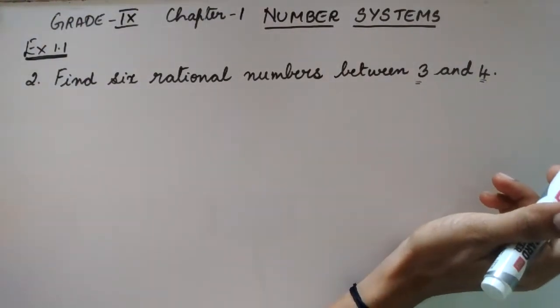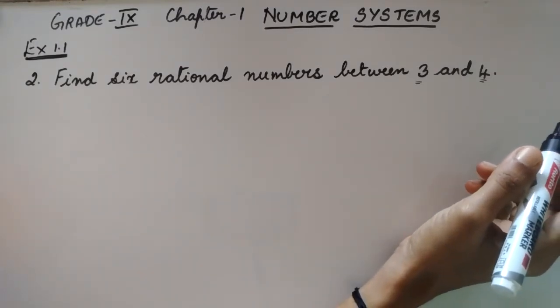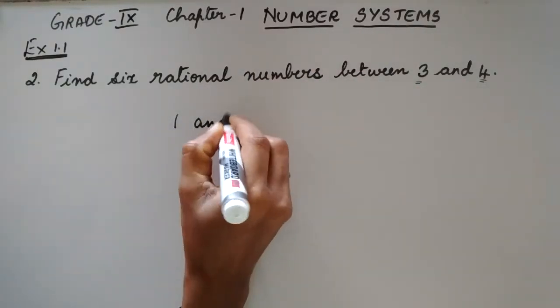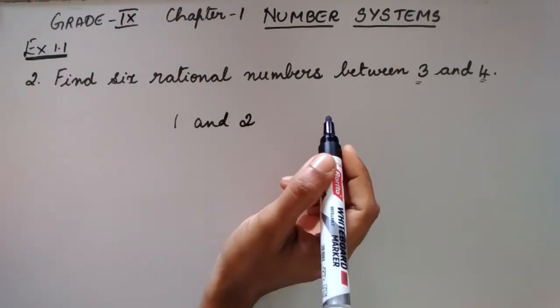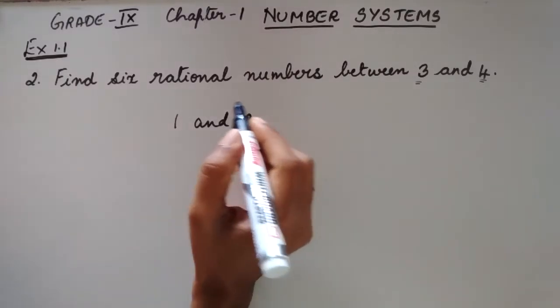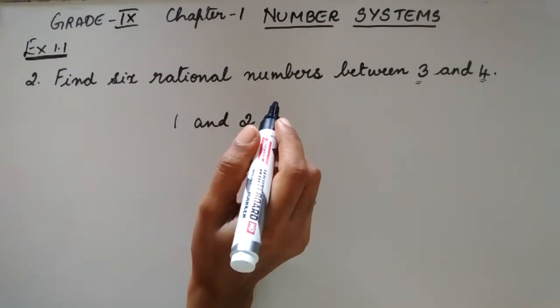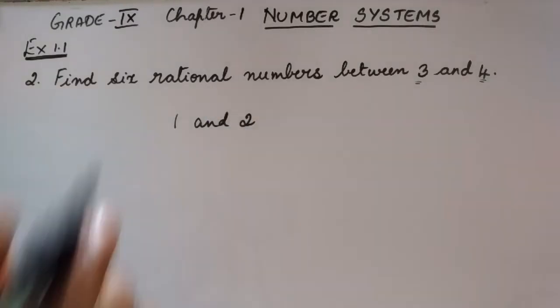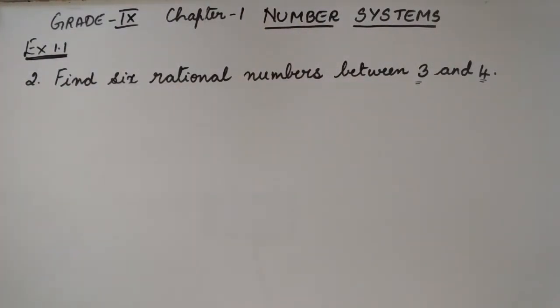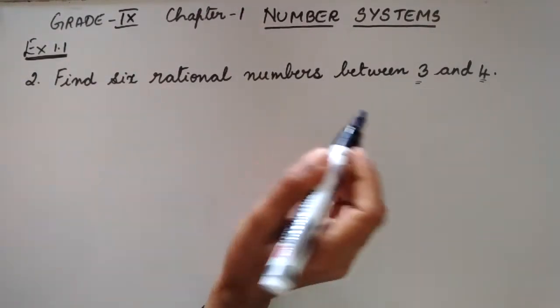In the last class, I solved a problem based on rational numbers that was to find 5 rational numbers between 1 and 2. There I taught you to find the rational numbers using the midpoint of these 2 rational numbers. That was the method to find the rational numbers between 1 and 2.